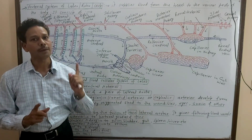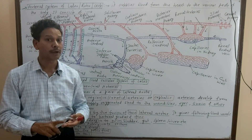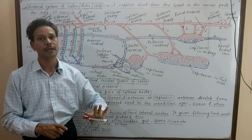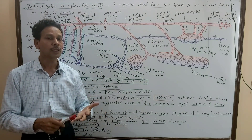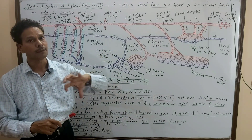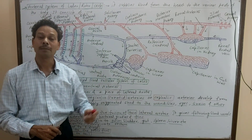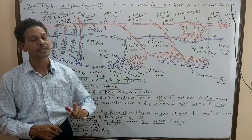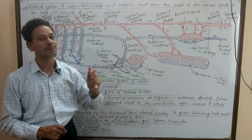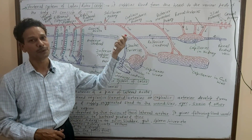Students, today we will discuss a very important topic of Labeo, that is the blood vascular system. This blood vascular system is of closed type and it is divided into four parts: blood, heart, arterial system, and venous system. Today we will discuss the arterial system of the blood vascular system of Labeo.